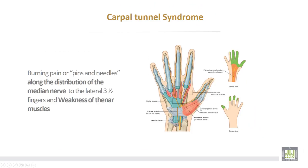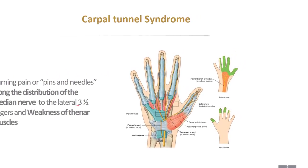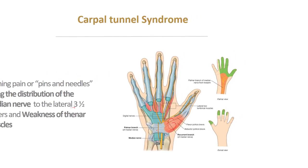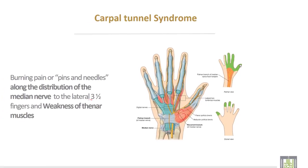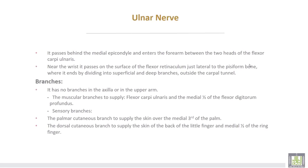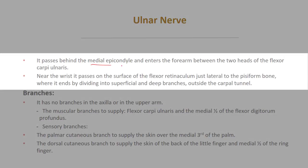Carpal tunnel syndrome causes pain or pins and needles along the distribution of the median nerve to the lateral three-and-a-half fingers, and weakness of the thenar muscles. The lateral three-and-a-half fingers are the affected area.